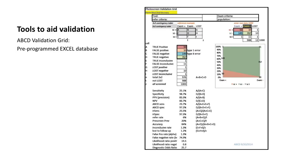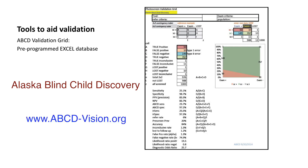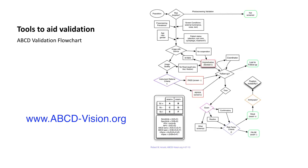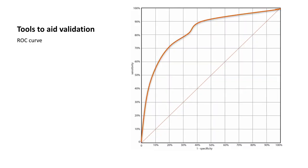Some tools that help understand validation are provided by the Alaska Blind Child Discovery, including the ABCD validation grid, which is an Excel interactive spreadsheet that allows you to calculate multiple validation statistics if you have screening numbers. In addition, ABCD has a flowchart so that you might understand better how vision screening can be applied and assessed.